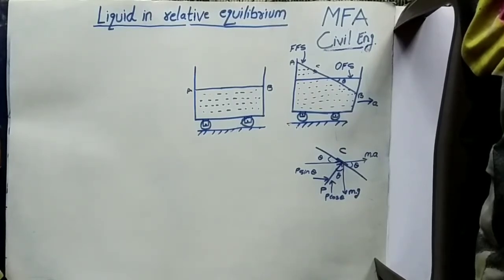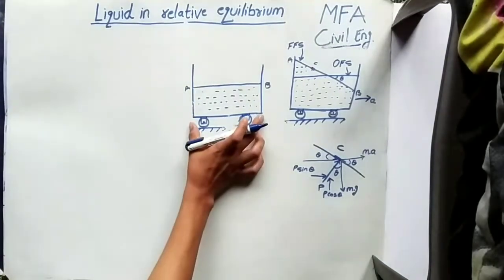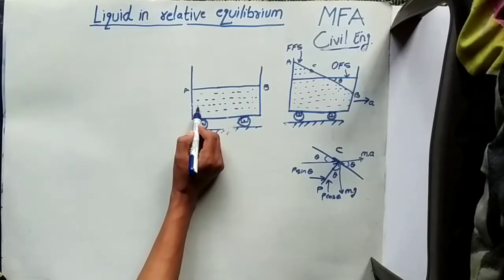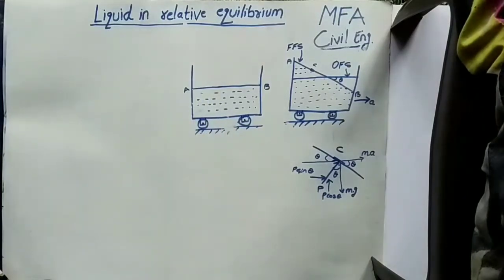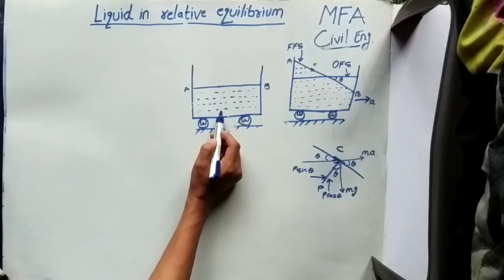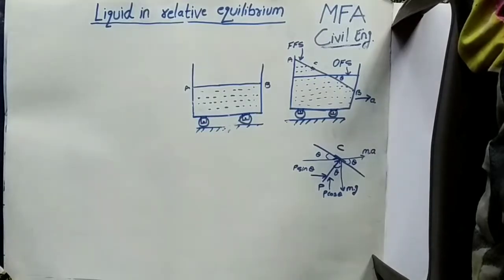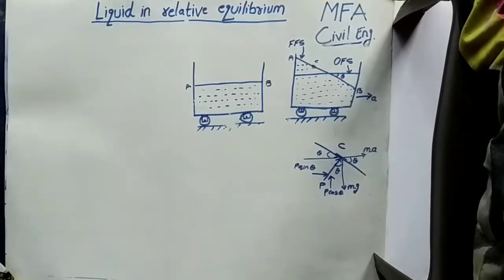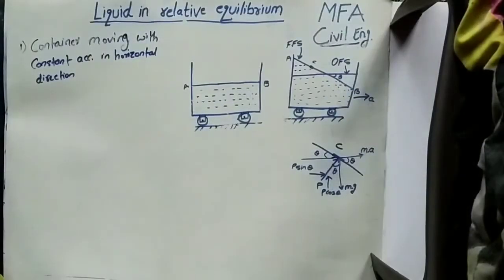In a previous video on hydrostatic force on surfaces, we learned about pressure force acting on different surfaces when the liquid is in contact with the surface and the liquid is in a state of rest. In this case, when a container holding a liquid moves with constant acceleration, initially there is relative motion between the liquid particles and the container boundary. The free surface of the liquid starts changing due to the influence of acceleration. After a certain time, the liquid occupies another position where there is no relative motion between the liquid particles and the boundary of the container. The shear force and shear stresses acting on the boundary become equal to zero, and the liquid is at rest in this final position. The laws of hydrostatics can then be applied to determine the pressure force acting on any point of the liquid.